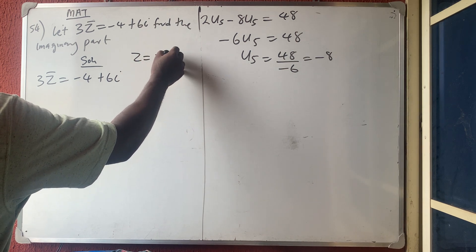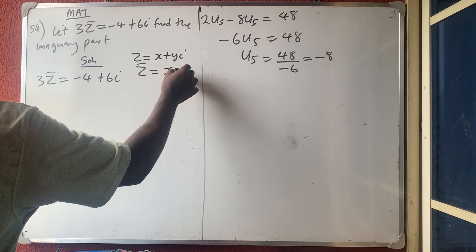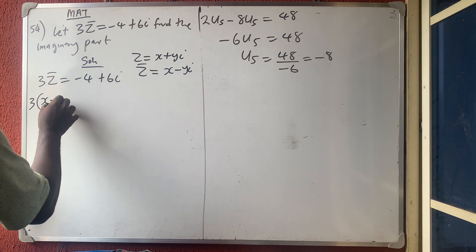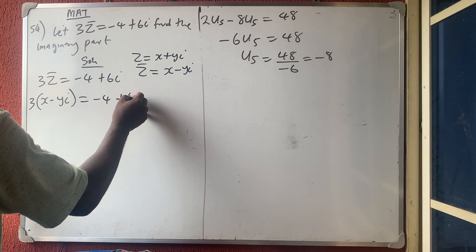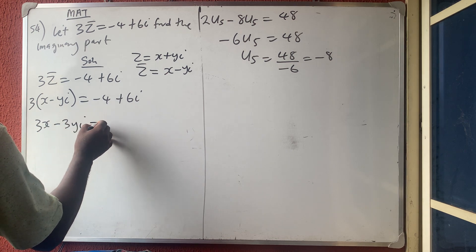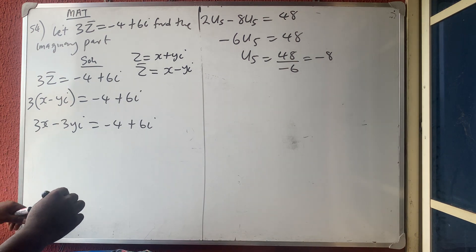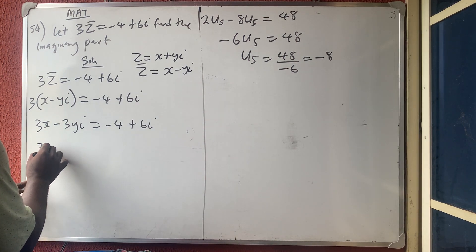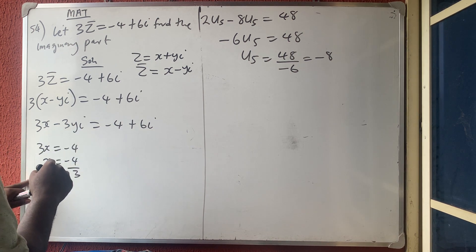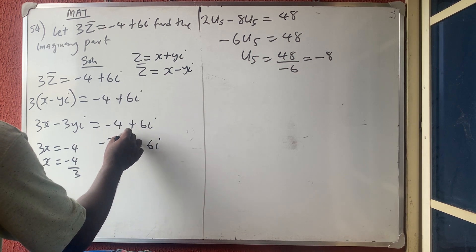Substituting: 3(x minus yi) = minus 4 plus 6i. Opening the bracket gives 3x minus 3yi = minus 4 plus 6i. Comparing real and imaginary parts: 3x = minus 4, so x = minus 4 over 3. For the imaginary part: minus 3y = 6, so y = 6 divided by minus 3, which is minus 2.